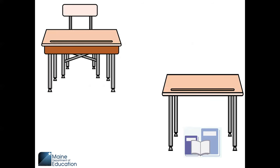If at all possible, students should be spaced apart so that they cannot easily see each other's device screens or paper test booklets. If space is tight, Maine DOE recommends dividers or privacy shields.